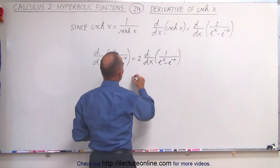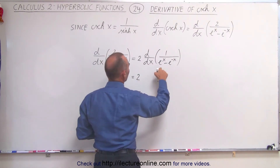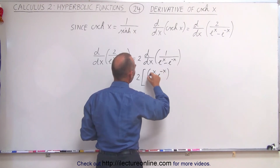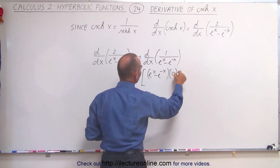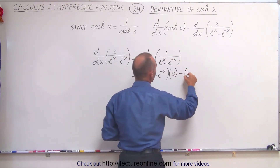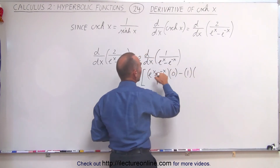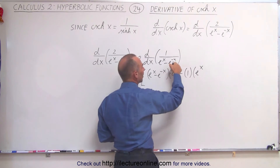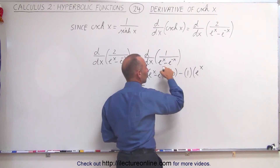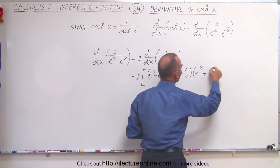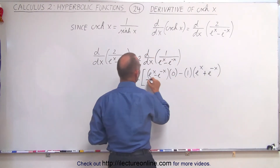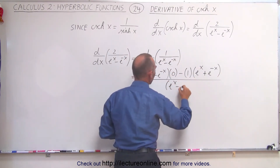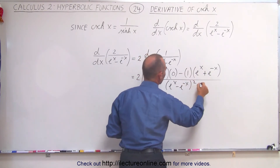So this becomes equal to 2 times the denominator, which is e to the x minus e to the minus x, times the derivative of the numerator, which is 0, minus the numerator, times the derivative of the denominator, which is e to the x. And when we take the derivative of e to the minus x, we get an extra minus sign, which turns into a positive e to the minus x — all divided by the denominator squared, which is e to the x minus e to the minus x, quantity squared.